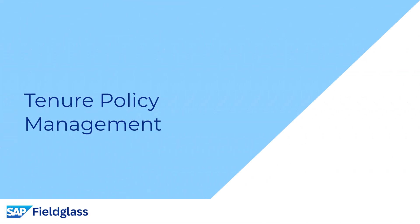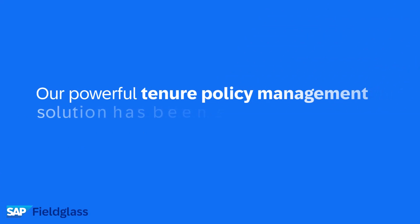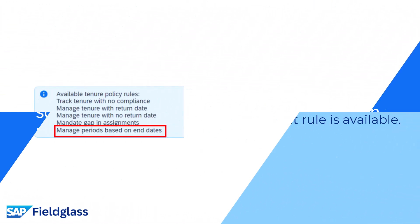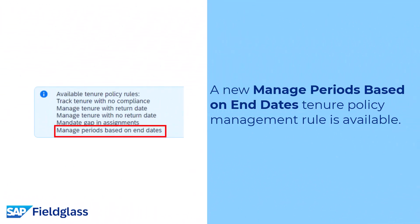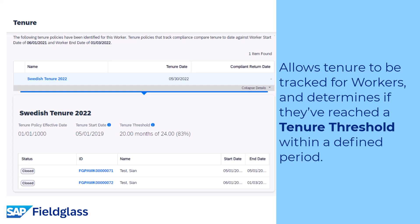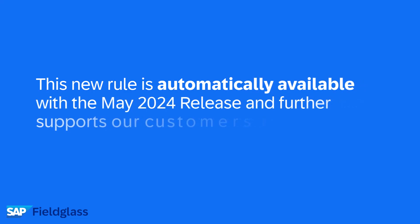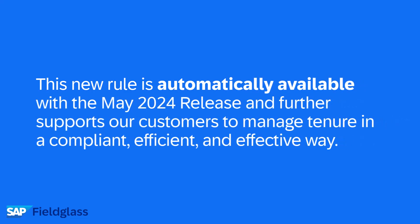Now let's talk about Tenure Policy Management. Our powerful Tenure Policy Management solution has been enhanced to support even more tenure regulations. With this release, a new 'Manage Periods Based on End Dates' Tenure Policy Management Rule is available. This allows tenure to be tracked for workers and determines if they've reached a tenure threshold within a defined period. This new rule is automatically available with the May 2024 release and further supports our customers to manage tenure in a compliant, efficient, and effective way.